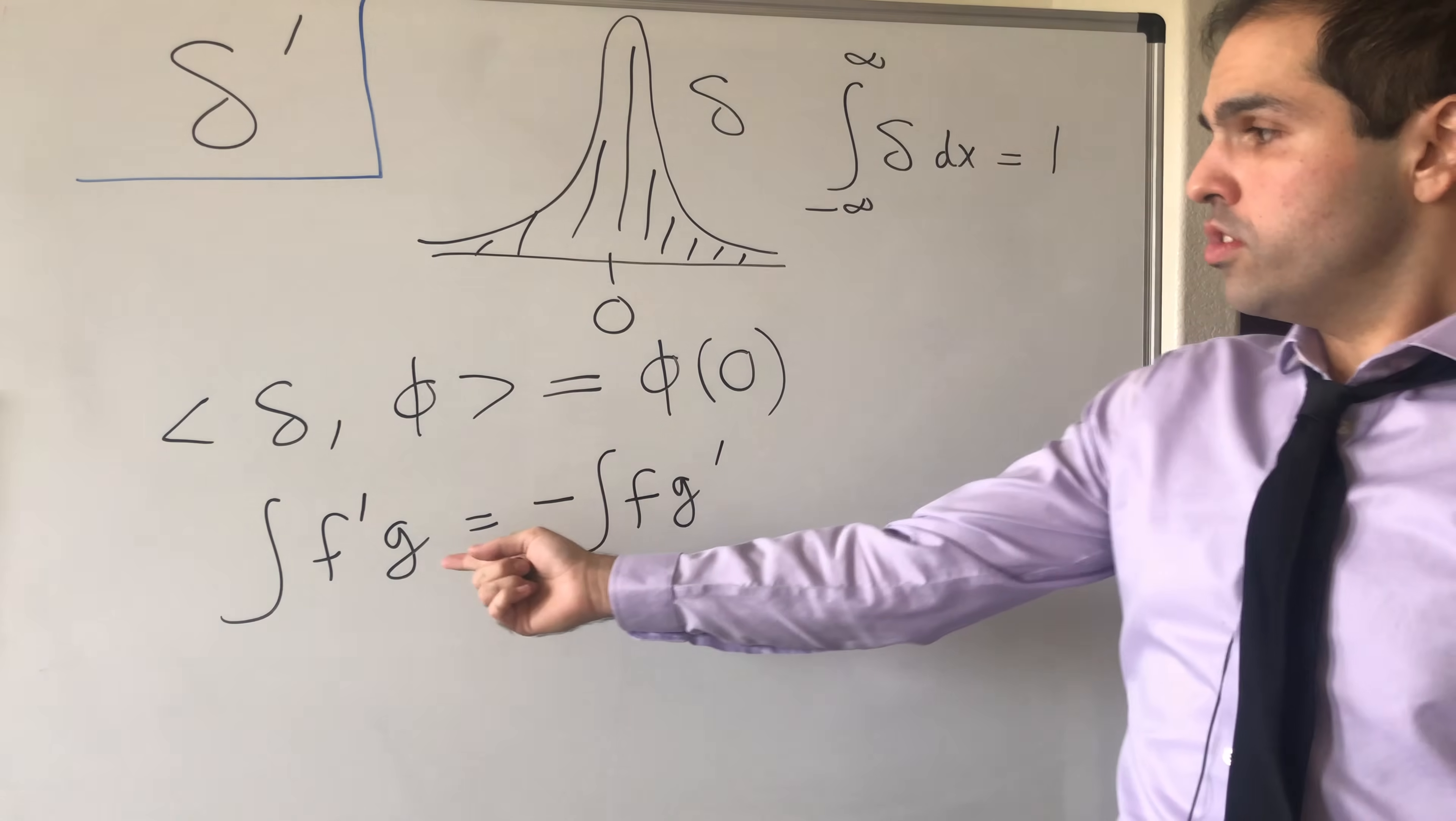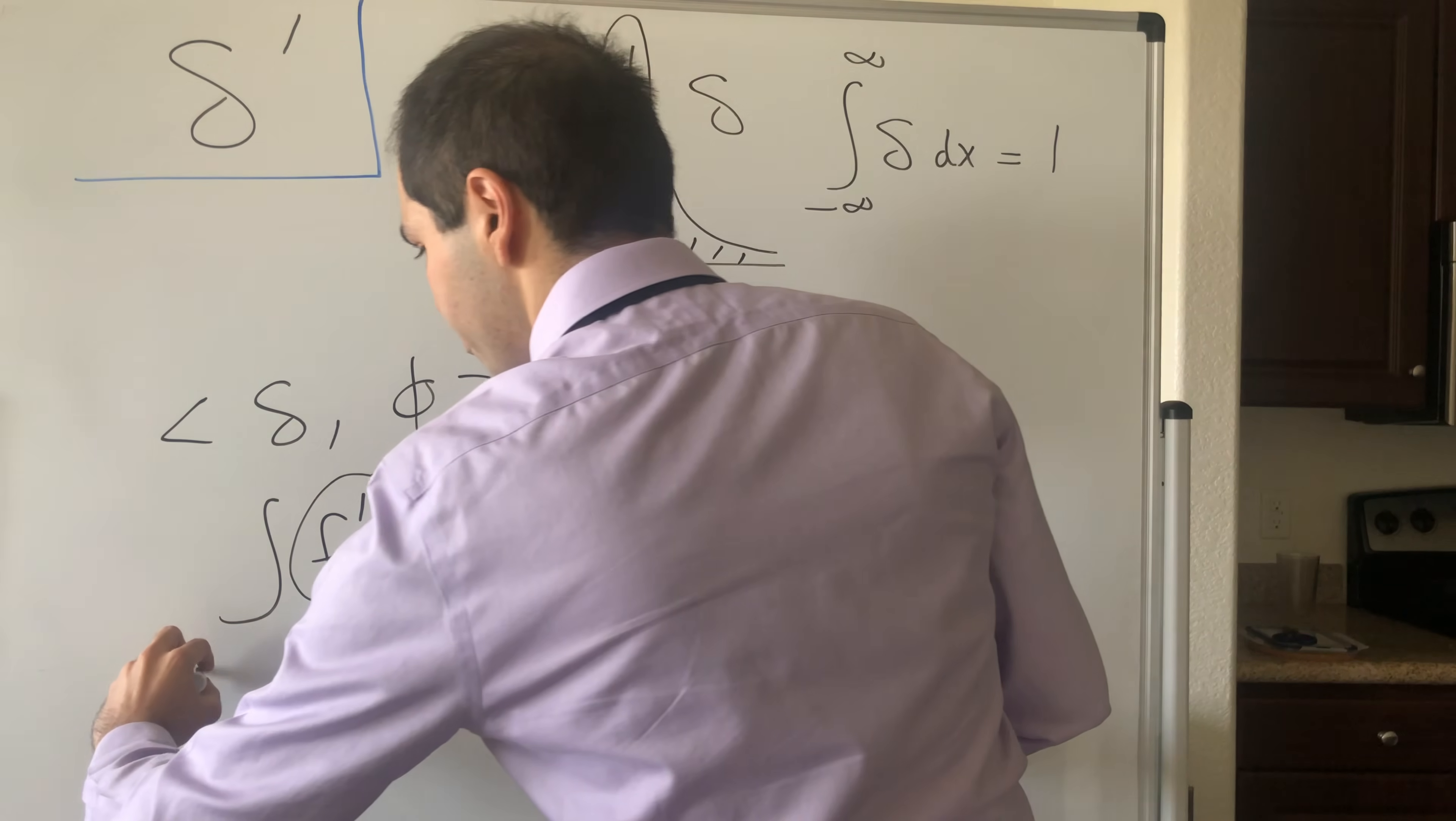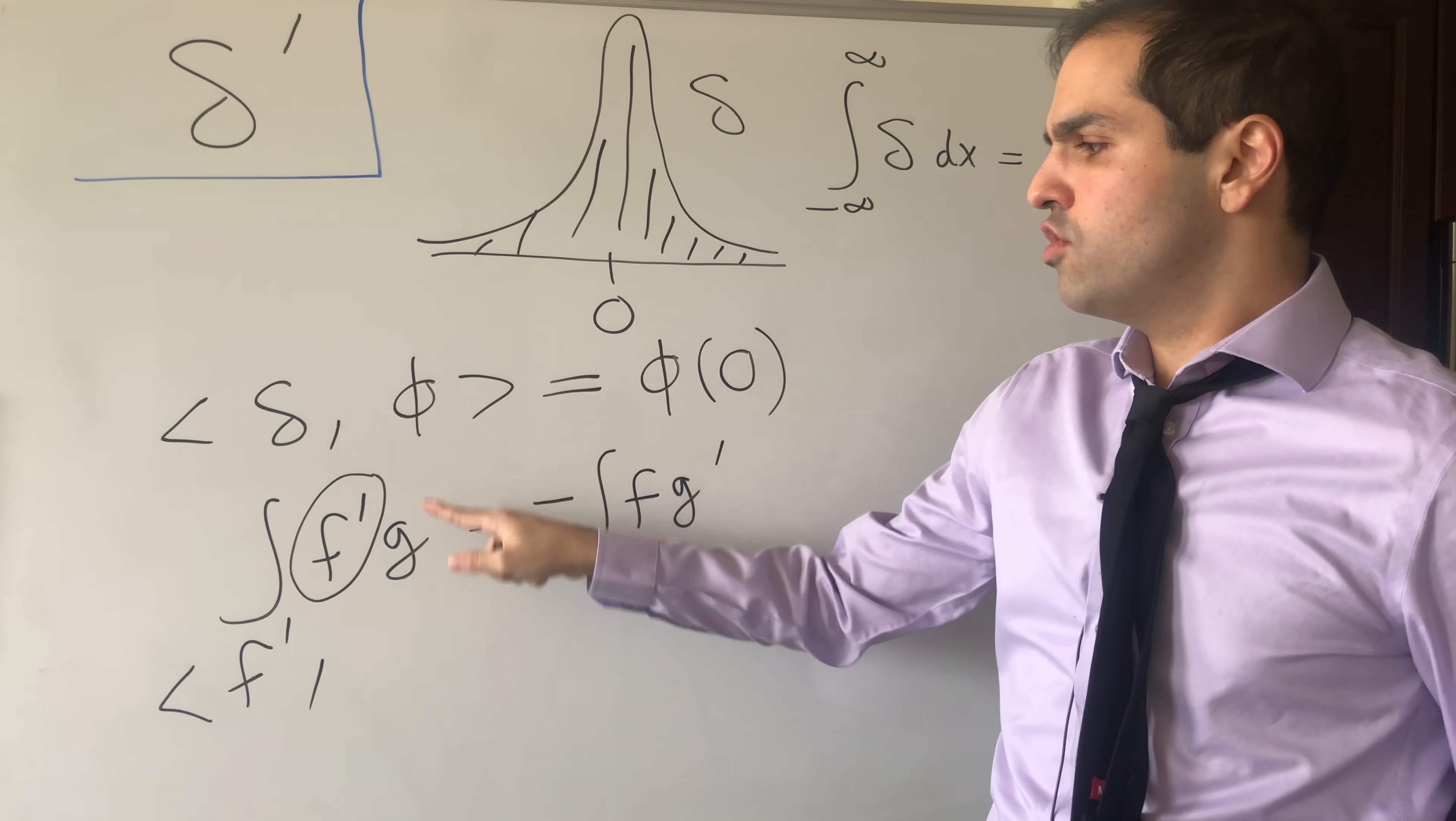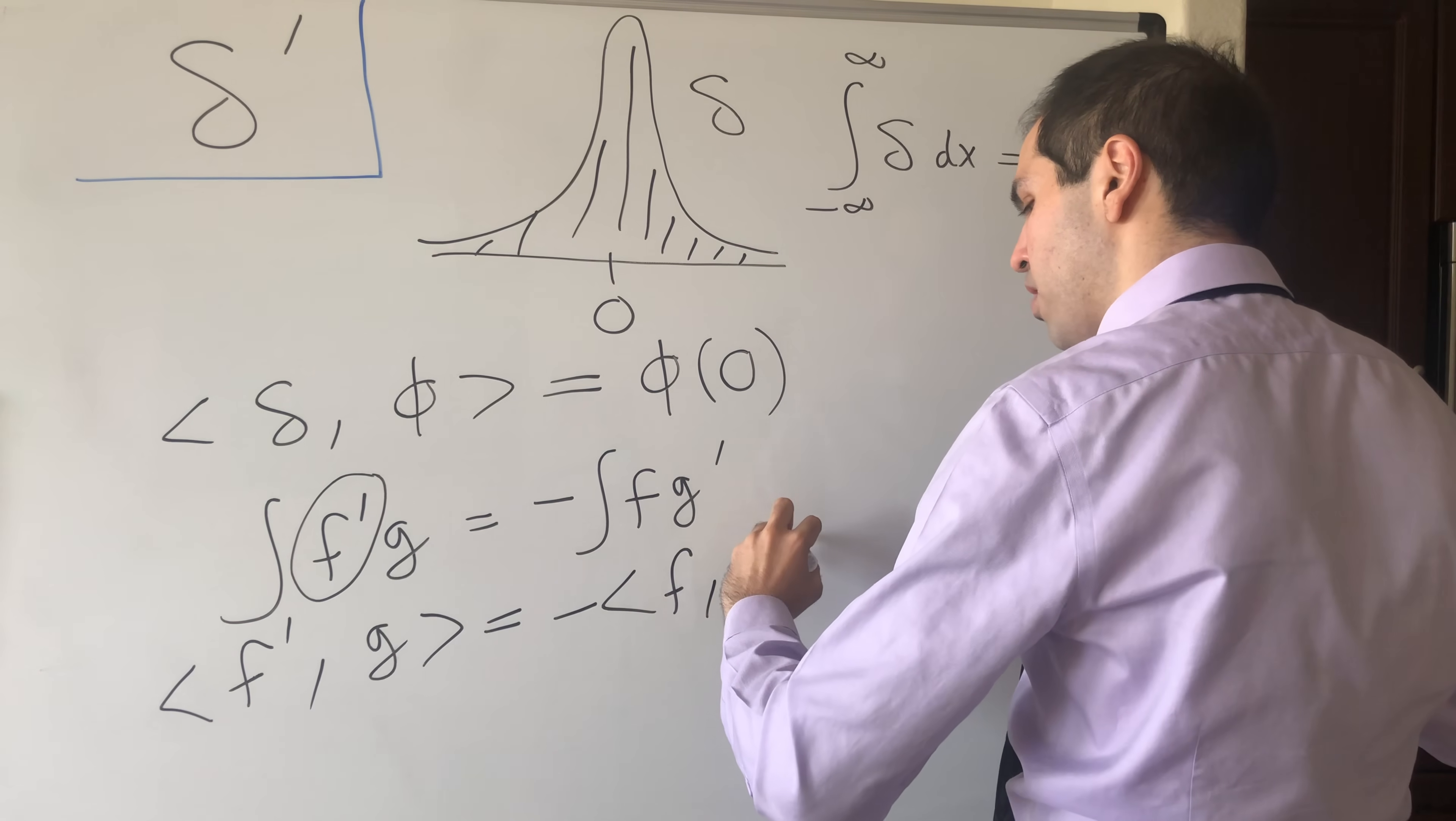And it turns out that's precisely how you can define the derivative f prime of a distribution. Namely, the derivative f prime of a distribution is just the functional that takes functions phi or g as an input and spits out minus f applied to g prime.